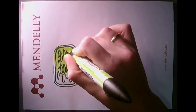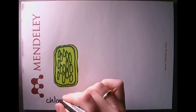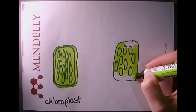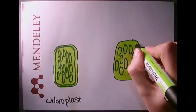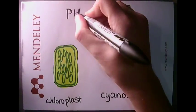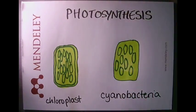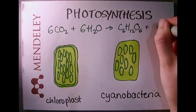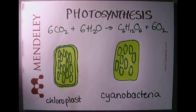Let's look at one chloroplast up close and compare it to a type of bacteria called cyanobacteria. They are very similar — they both contain chlorophyll and are both capable of photosynthesis.